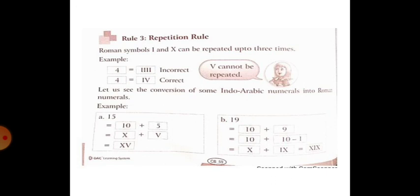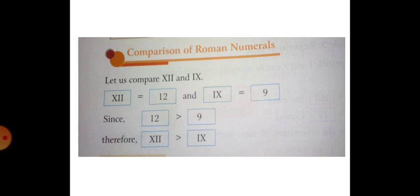Let us see the conversion of some Indo-Arabic numerals into Roman Numerals. For example, the number 15: we split it as 10 plus 5. In Roman Numerals, 10 is X and 5 is V, so XV represents 15. This is how we convert Indo-Arabic numerals into Roman Numerals.